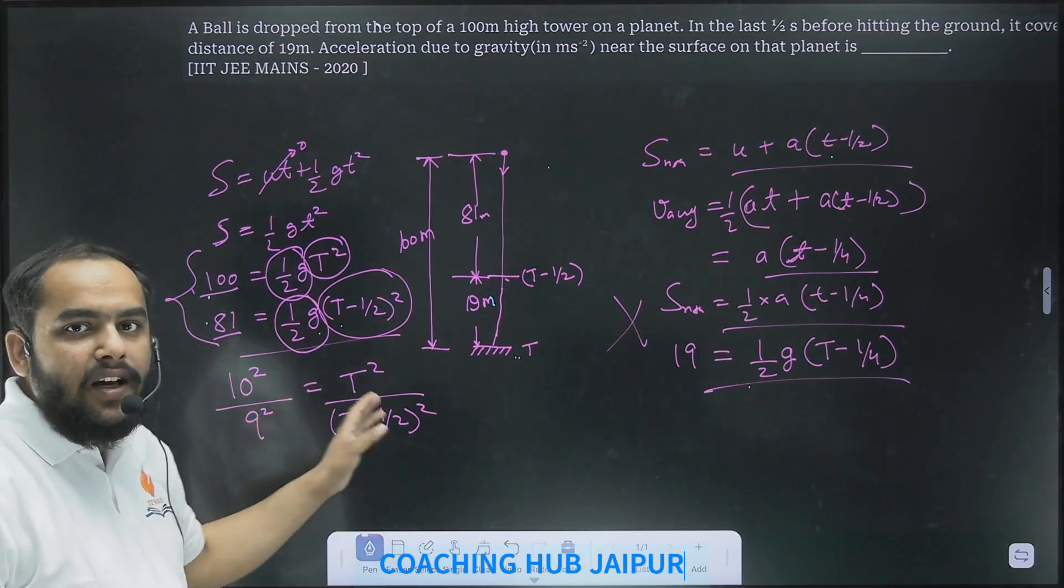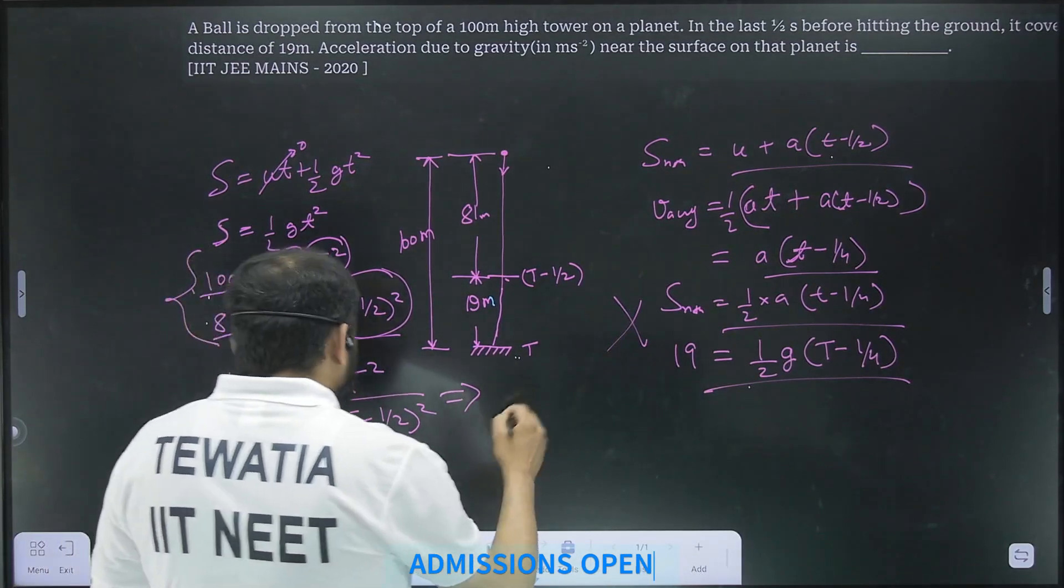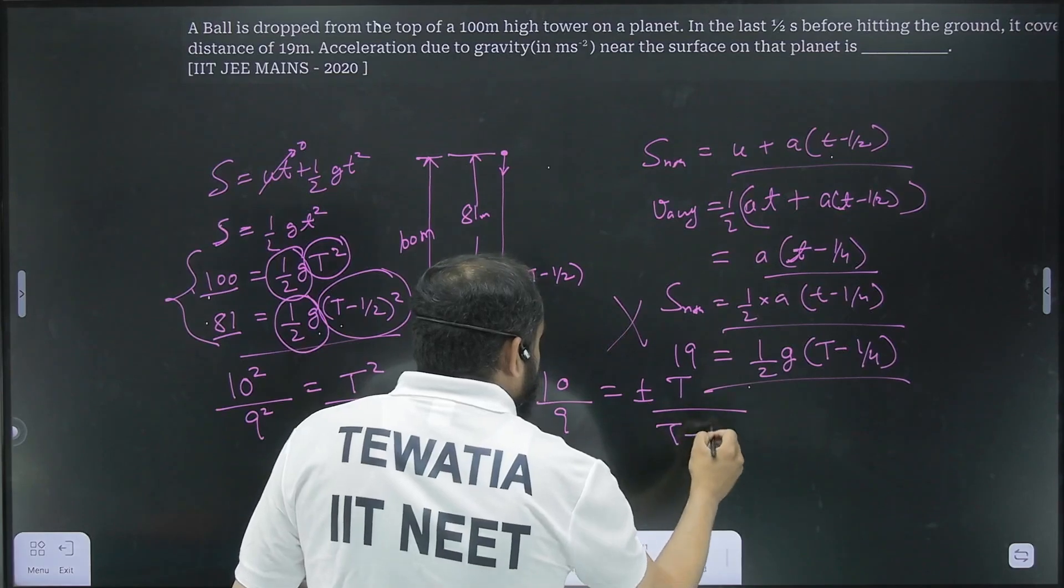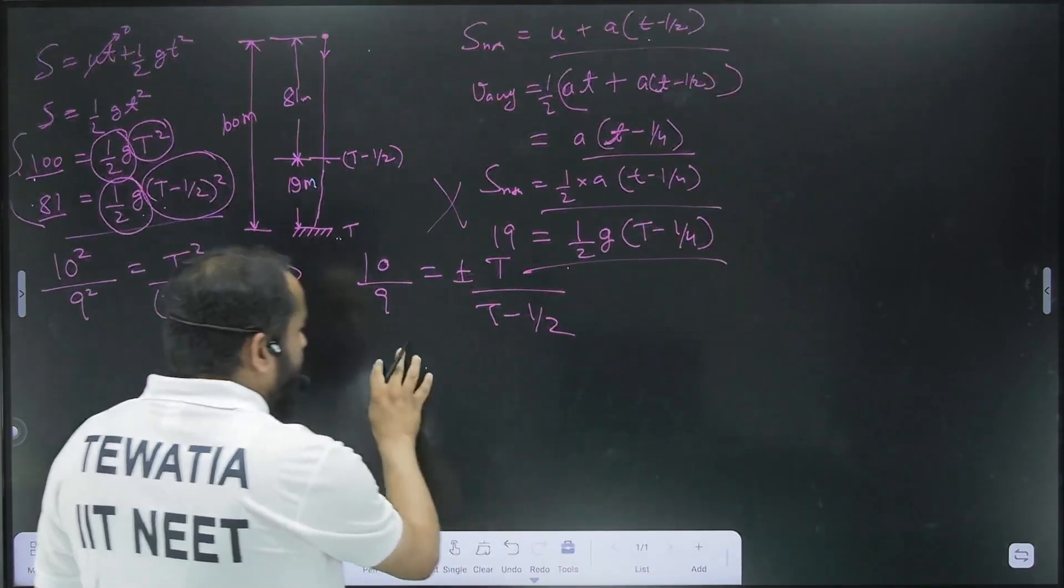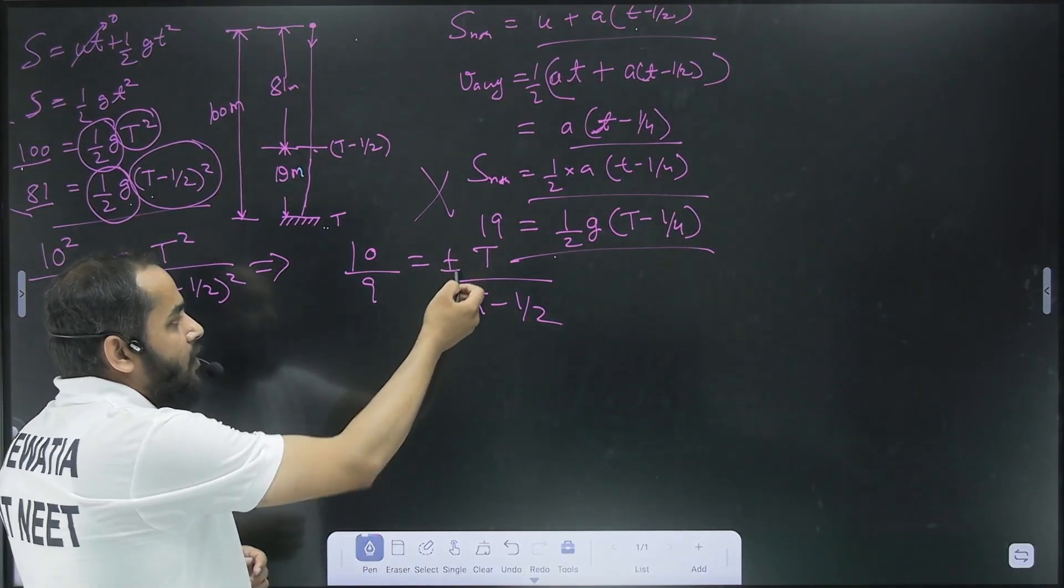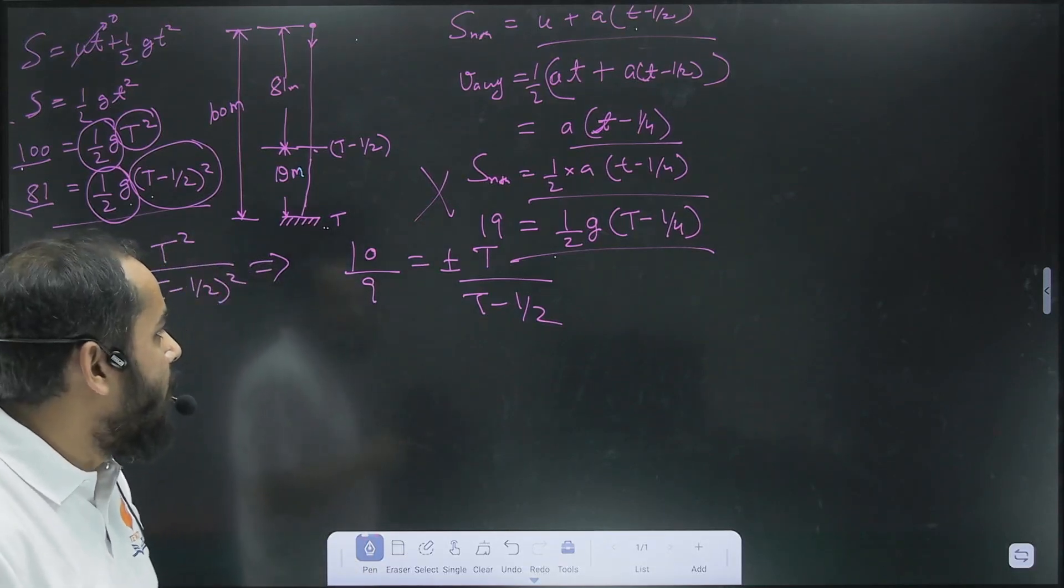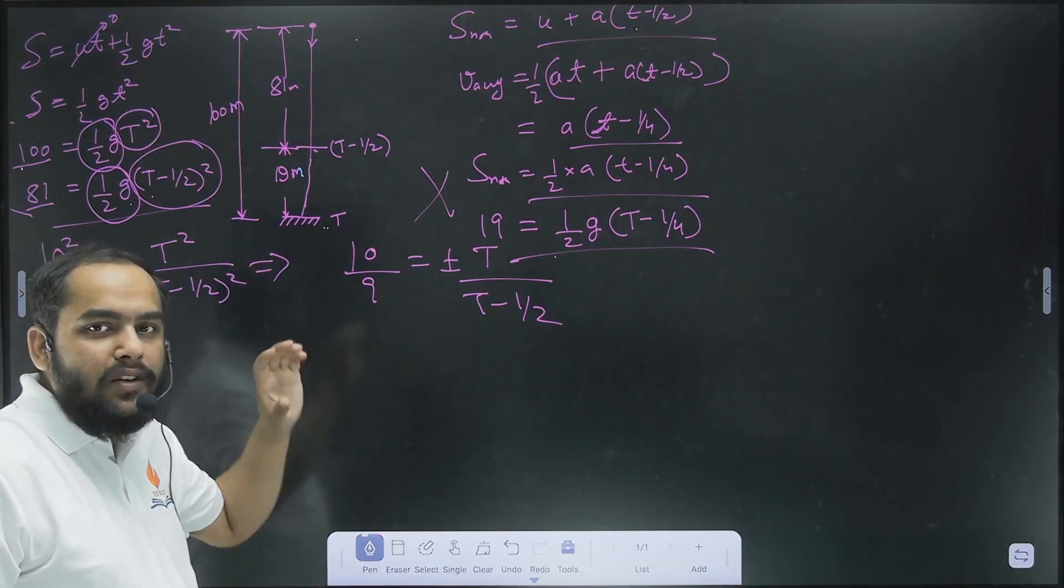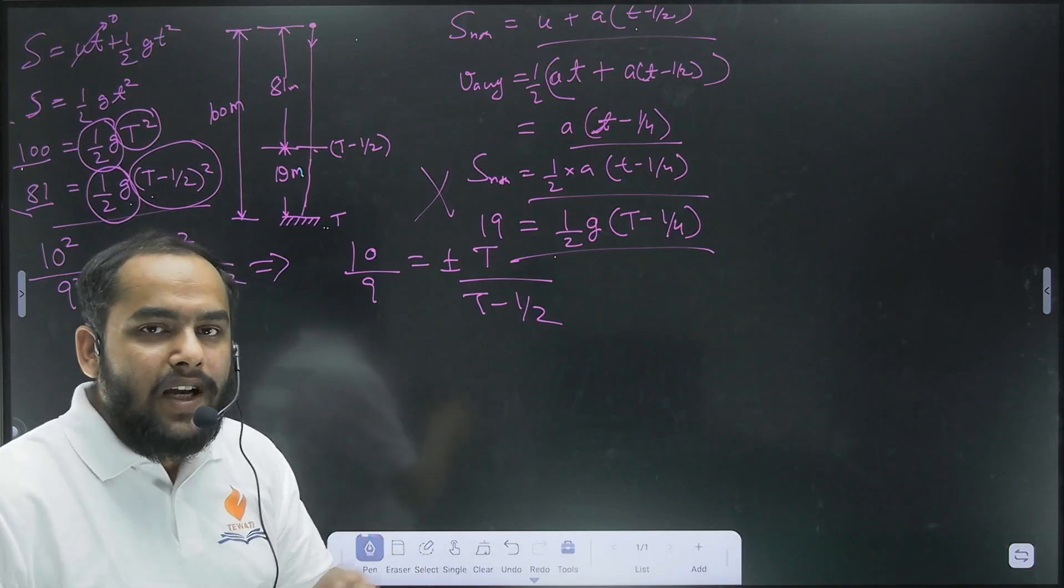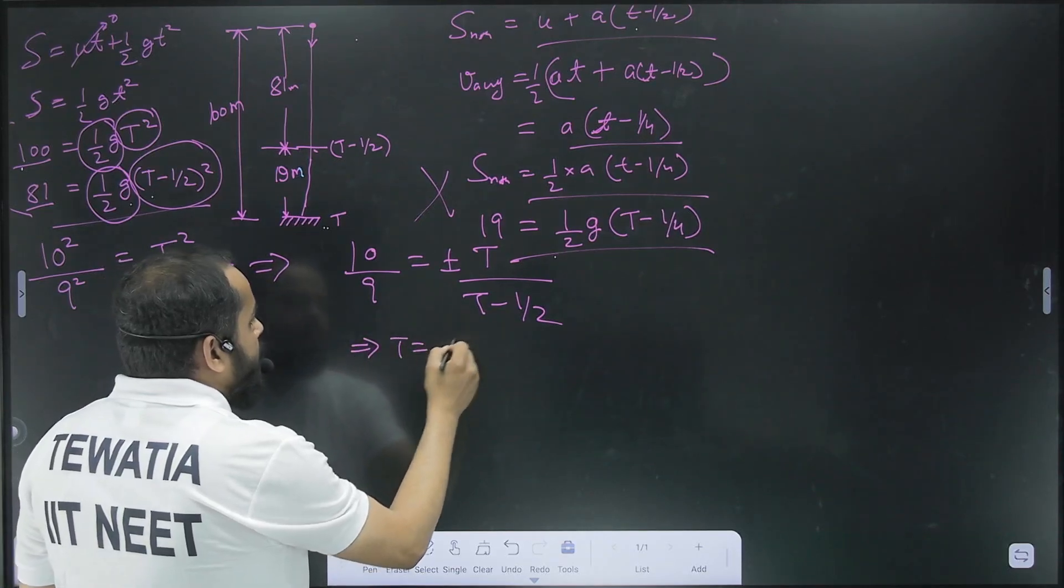Both the LHS and RHS now have squares so we can just take the under root and arrive at 10 by 9 equal to plus or minus t over t minus 1 by 2. Now once we get to this point, we can either use the plus for a solution or the negative. But if you take the negative sign here, it is going to give some absurd solution of time. So now we take plus here and we cross multiply and this is going to give us t equals 5 seconds.